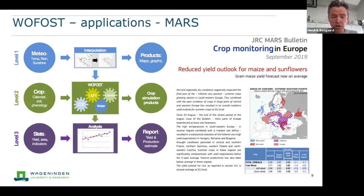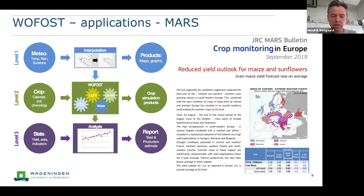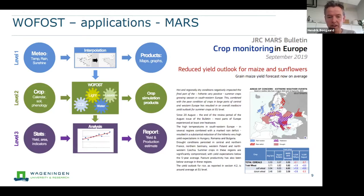More information can be found through the URL. On the right is an example bulletin produced through this system. Analysts at the European Commission digest the weather data and crop simulation outputs from Wofost, turning them into maps showing areas over Europe that are more critical concerning droughts or rain and how that is affecting crop growth, as well as a table with forecasts of different commodities.